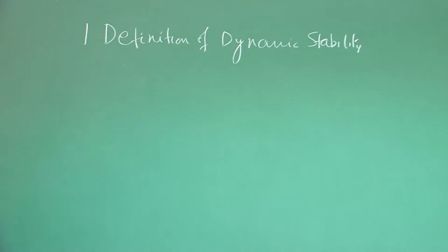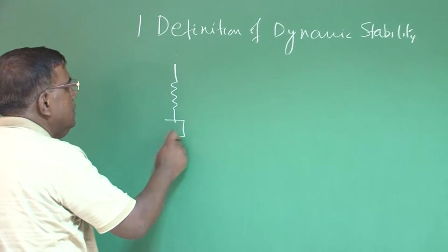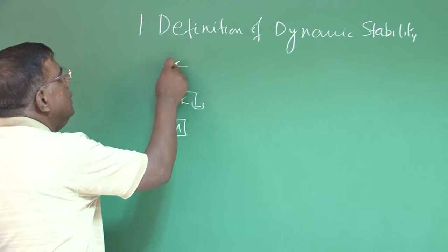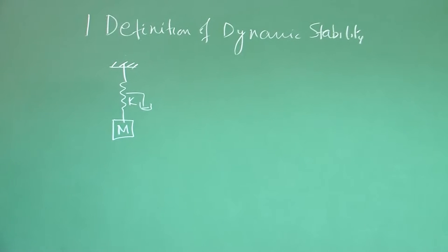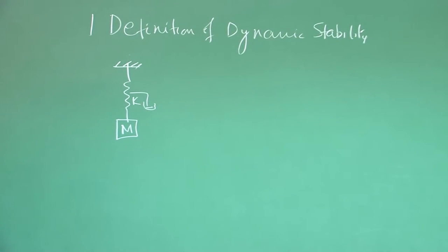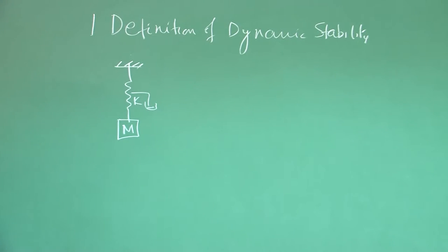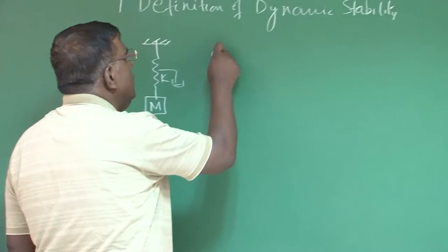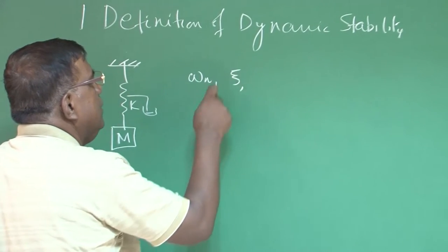We started with mass spring damper system, which is typically a second order system and most of our analysis takes help of understanding whatever we have through mass spring damper system and there we try to understood what is natural frequency, what is damping ratio.